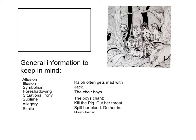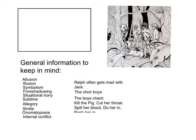Another literary term to keep in mind is onomatopoeia — a word that sounds the way it's spelled, like zoom, bash, meow. We do have some examples of that in the text. Especially when we're faced with the sublime, there's also internal conflict: we see Ralph mulling things over, depressed and sad. Those are just some general things to keep in mind.